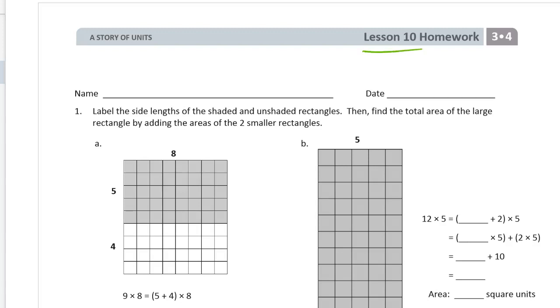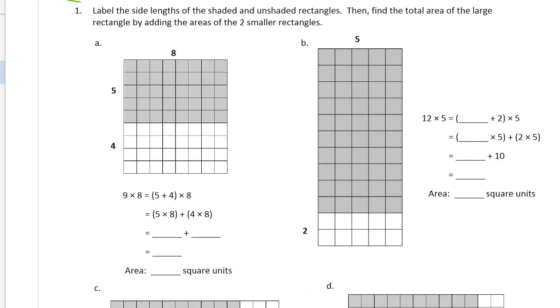This is the homework for lesson 10 of module 4 grade 3. Please write your name first. Label the side lengths of the shaded and unshaded rectangles, then find the total area of the large rectangle by adding the areas of the two smaller rectangles.